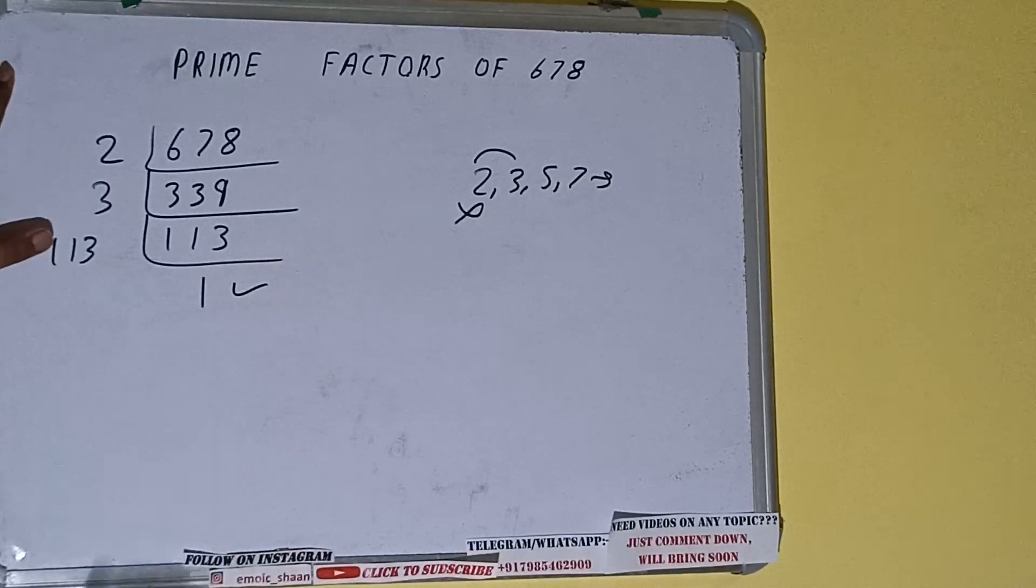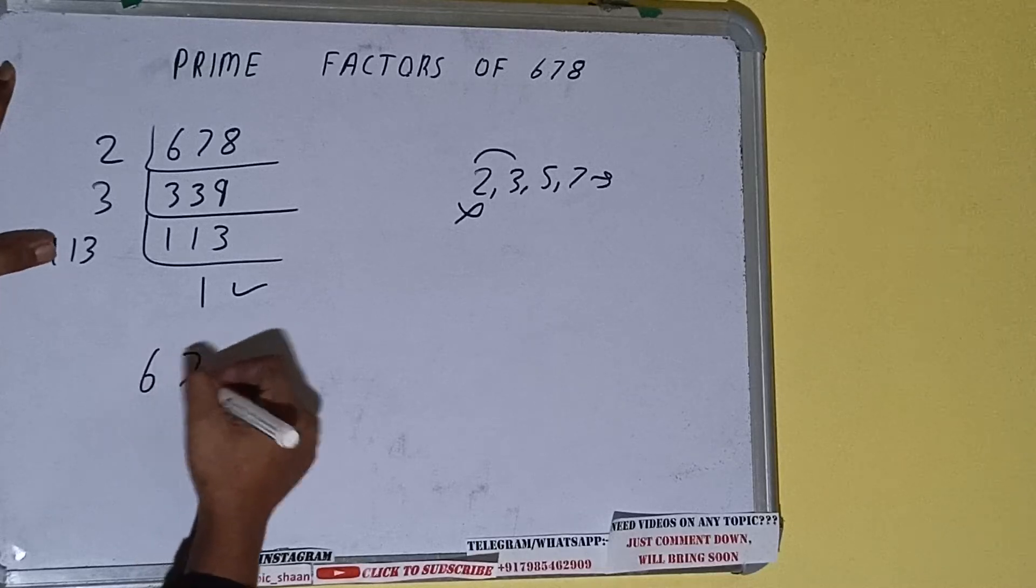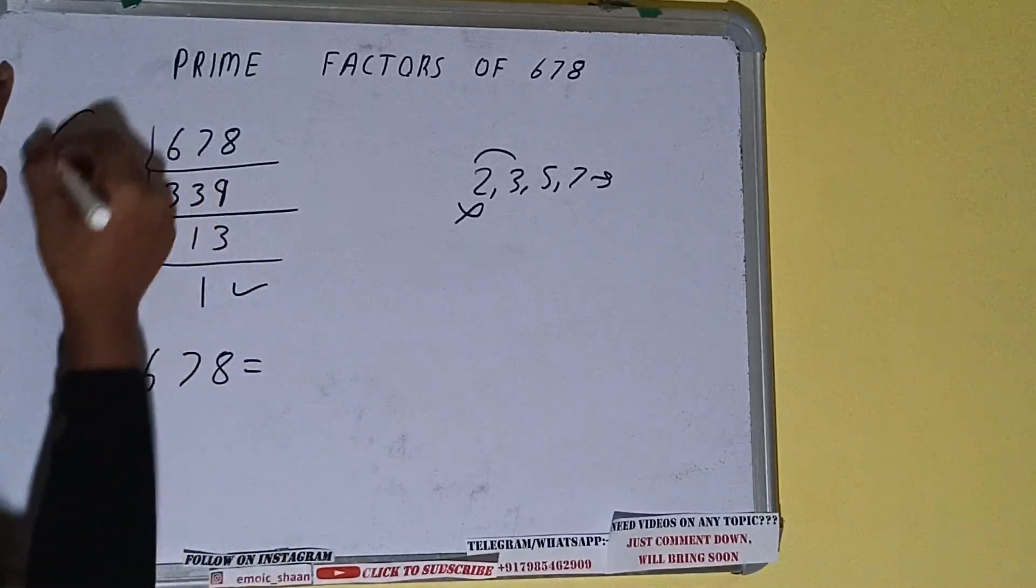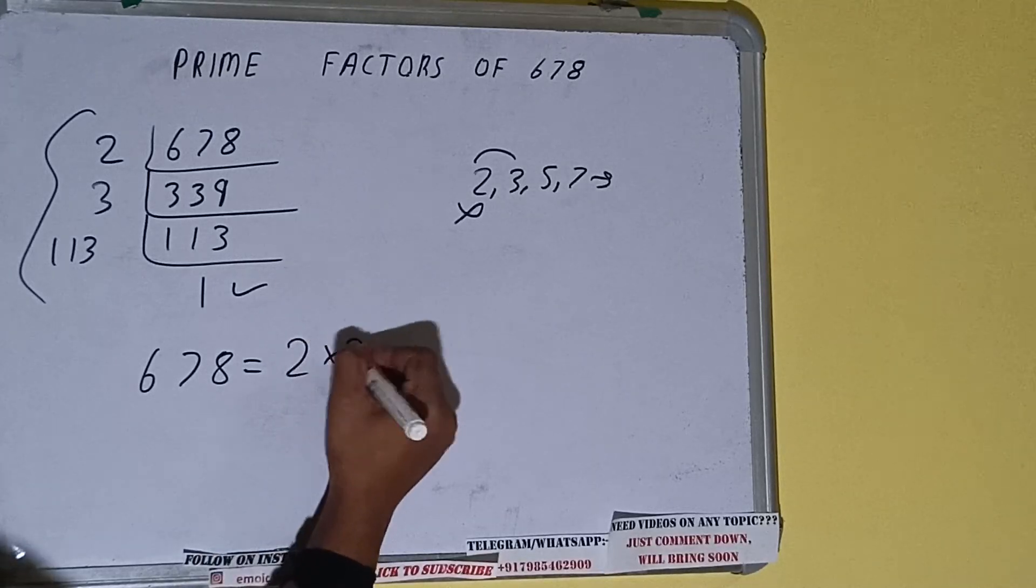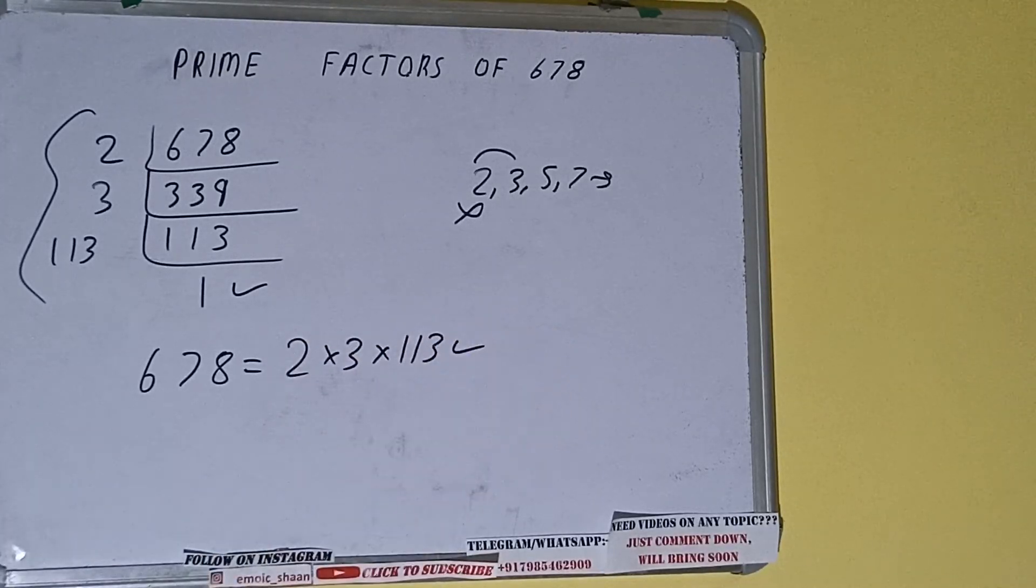Once we get 1, we need to stop and do one last thing. The prime factors of 678 equals whatever we have on the left side, that is 2 × 3 × 113. That will be the answer.